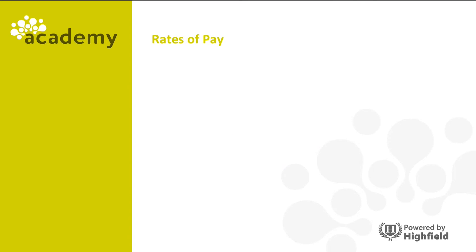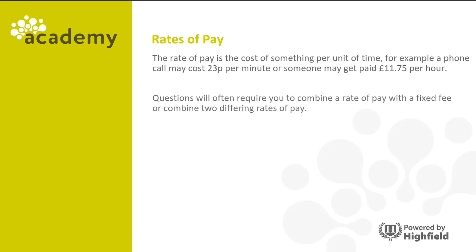Let's look at rates of pay. The rate of pay is the cost of something per unit of time. For example, a phone call may cost 23p per minute or someone might get paid £11.75 per hour. Questions will often require you to combine a rate of pay with a fixed fee or combine two different rates of pay.